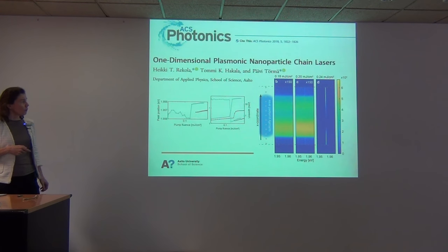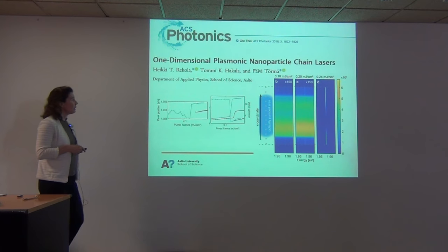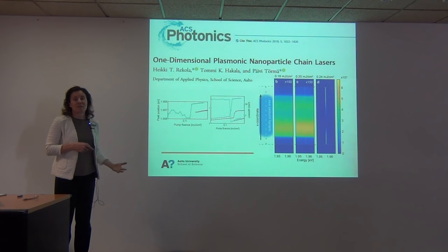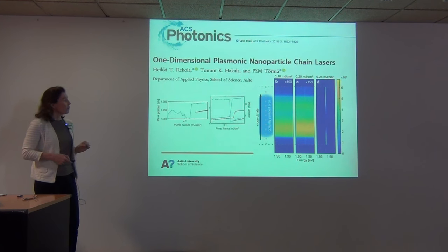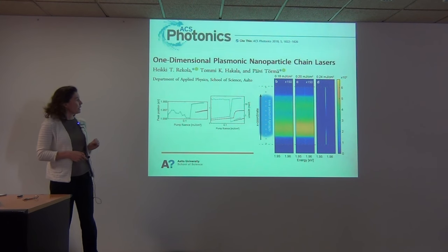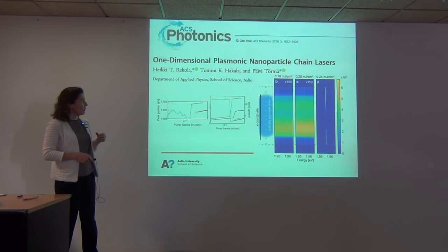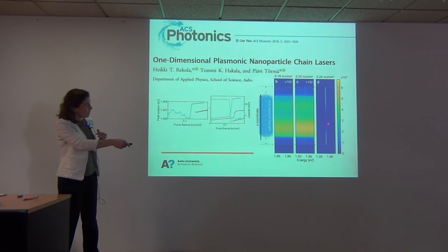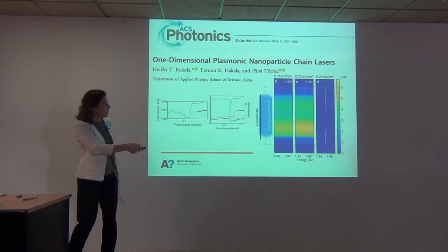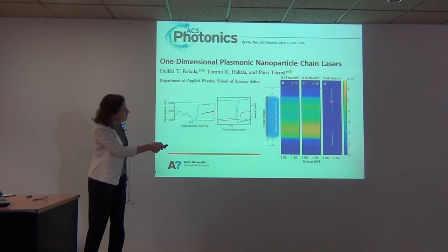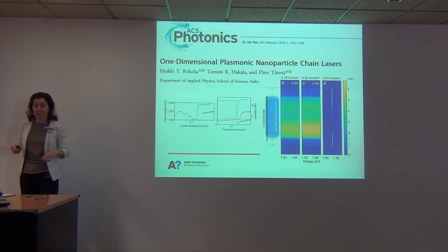One more work about our lasing studies: we asked what if we don't have an array, just a one-dimensional line. Nobody has done this before, and indeed we can get that to lase as well. It is this type of dark mode lasing — below threshold you just see fluorescence, but then above threshold it lases. It doesn't lase so much in the middle where the pump pulse was, but then it propagates along the wire and propagates away from the pump spot. This might be nice for integration.